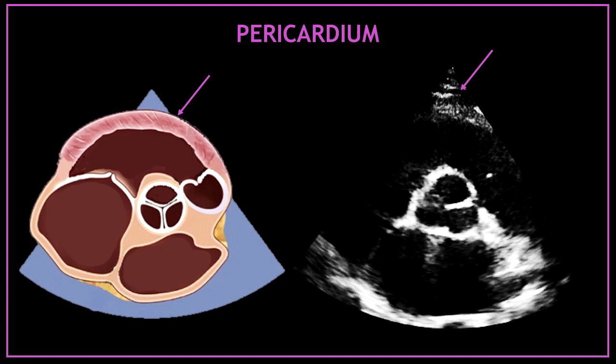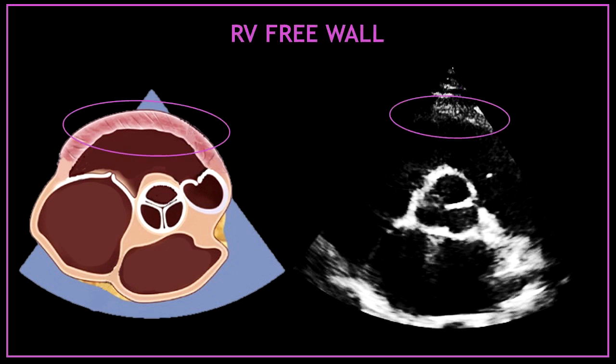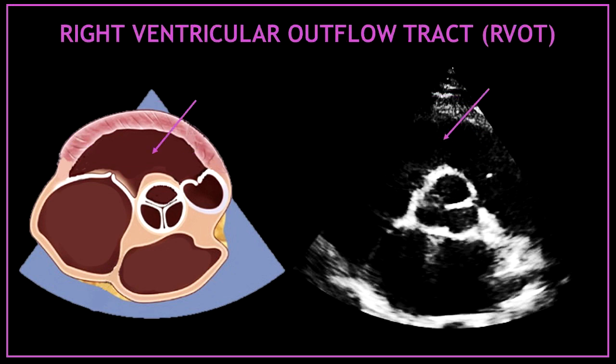Next to the pericardium we have a less bright and thicker segment that corresponds to the right ventricular free wall. The most anterior black space or echo-free space is the right ventricular outflow tract.